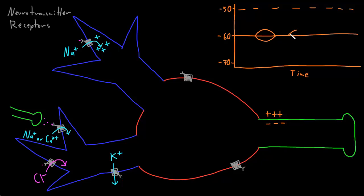Why doesn't the membrane potential just keep climbing? The first thing that happens is that the neurotransmitter will leave the receptor — it will become unbound. Without neurotransmitter bound, the ion channel will close, so it's no longer allowing positively charged sodium ions to flow into the neuron. That's going to cause the graded potential to plateau — it's going to stop growing at that point.